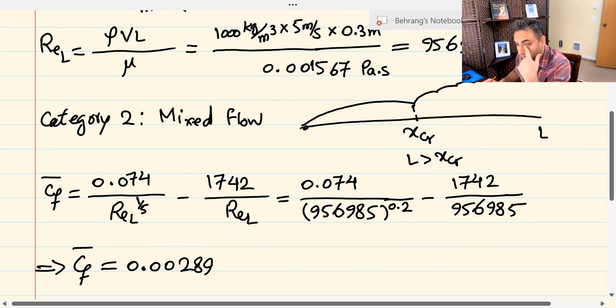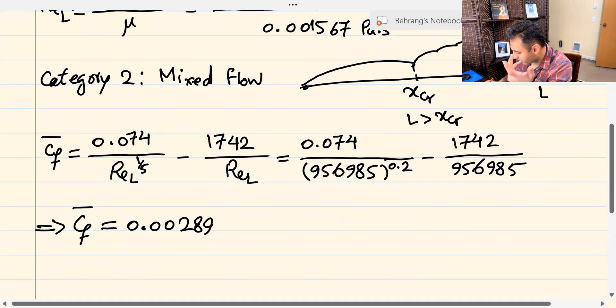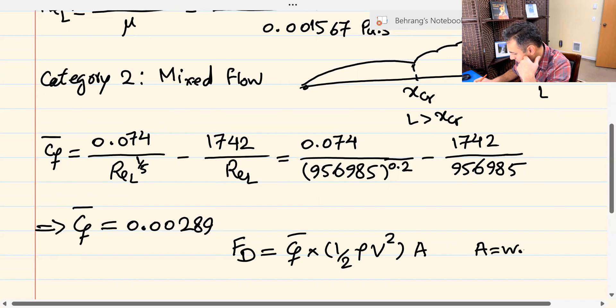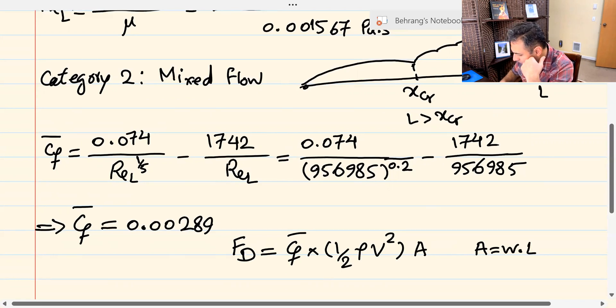Now, how do I calculate the total drag force? That's the beauty of the average friction coefficient. Once you have the average friction coefficient, you can calculate the total drag force. The total drag force would be, and this is on one side of it, so it says on the top, that would be the average friction coefficient times dynamic pressure times the area. Area, in this case, would be W times L.